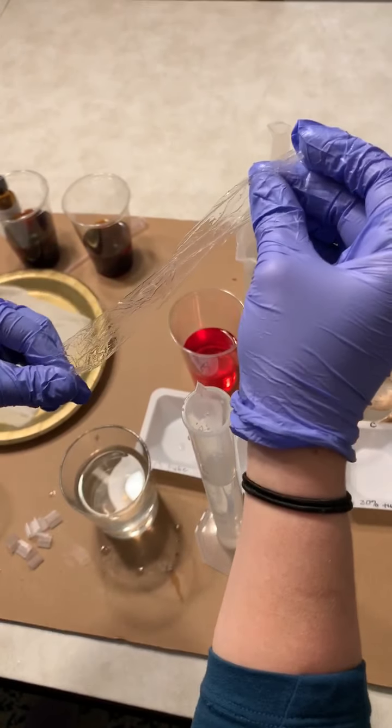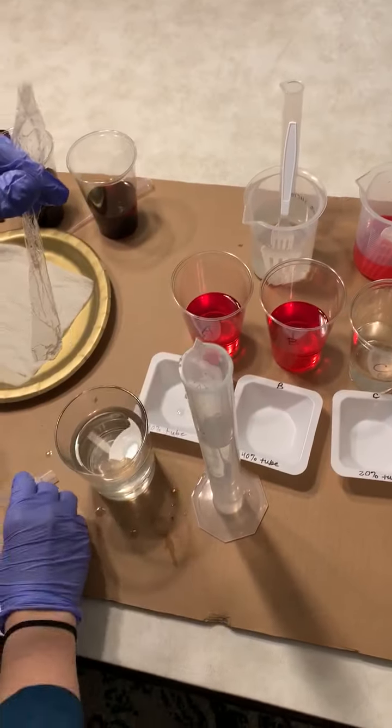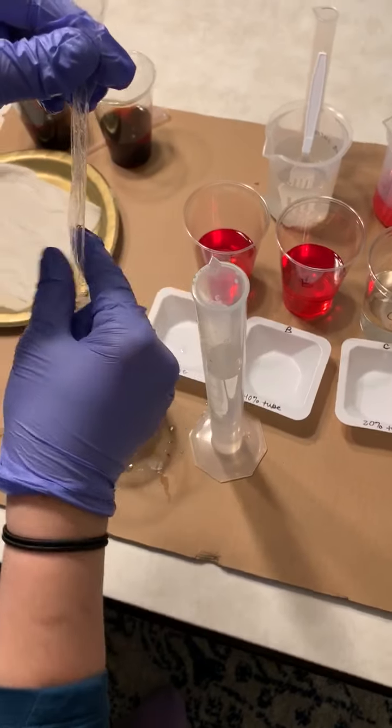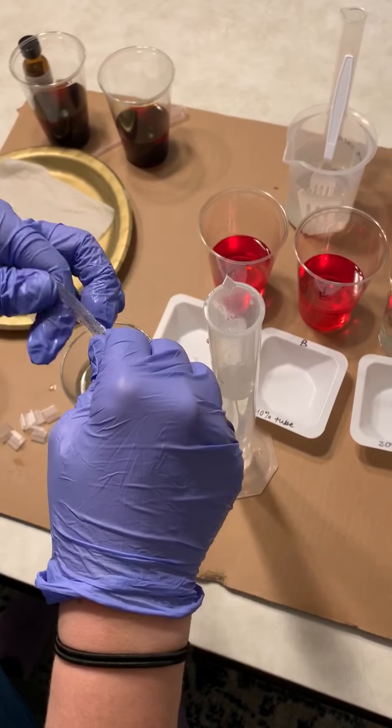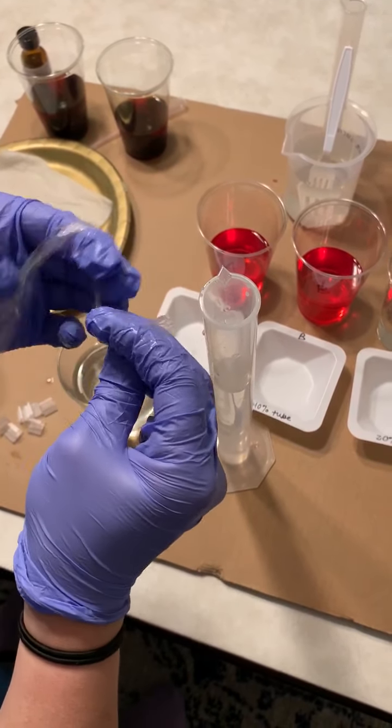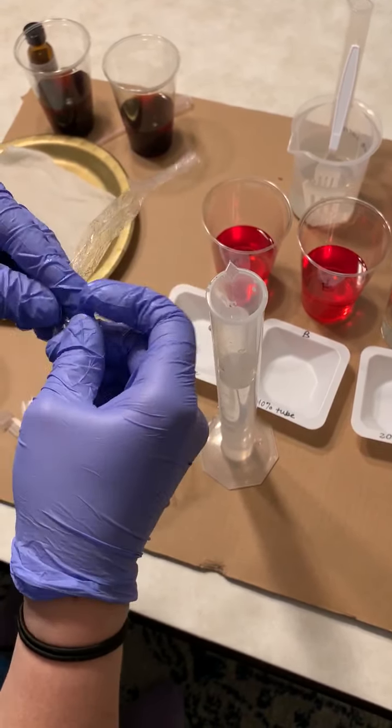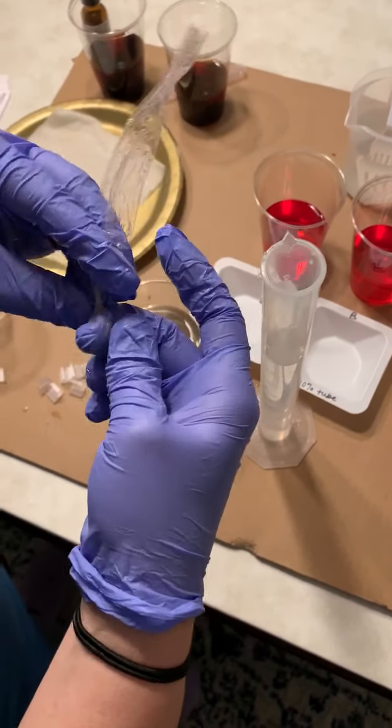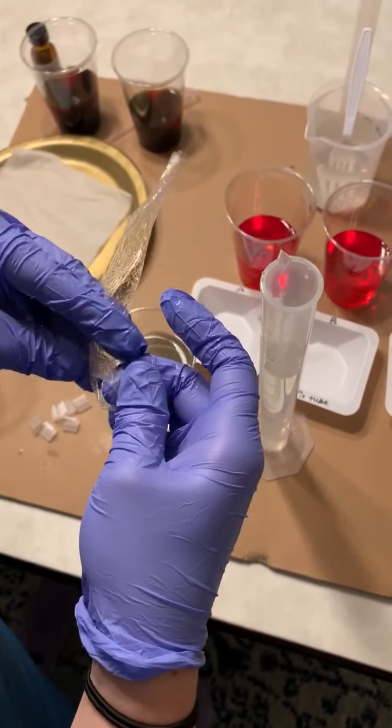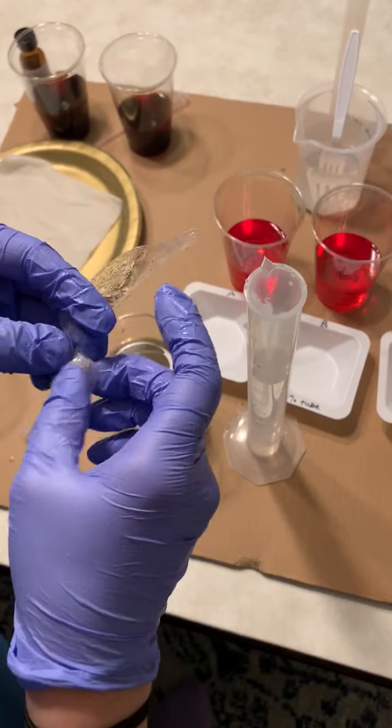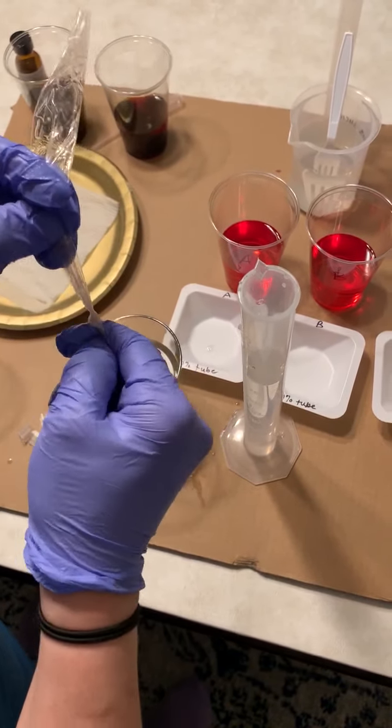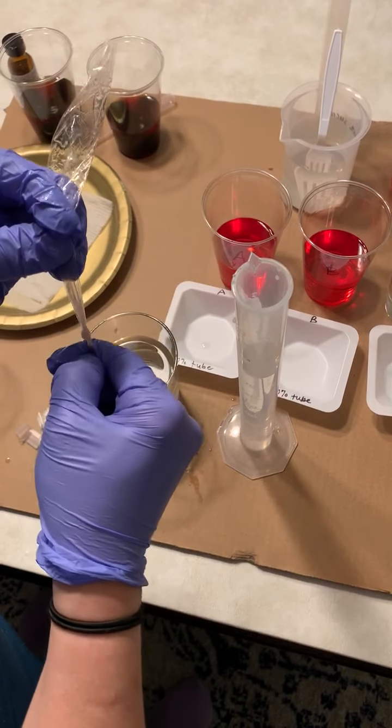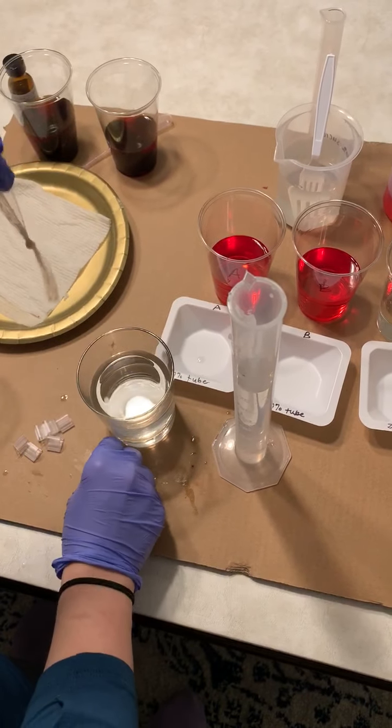All right, so the protocol gives you an option. You can use these clips to tie off the bottom of your tube, or you can tie a knot. I actually kind of recommend doing both if possible, so let's see if I can tie a knot. I haven't tried yet. It's probably going to be a little bit tricky because it is wet and slippery, but you want to make sure that you tie off the dialysis tube nice and tight because if it leaks, then your experiment is ruined.